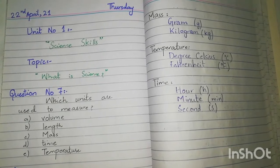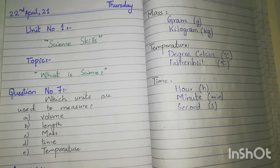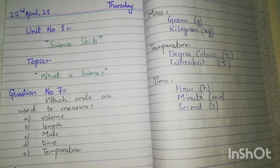Woh quantities koon koon se homare paas? Volume hai, length hai, mass hai, time hai, or temperature hai.